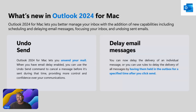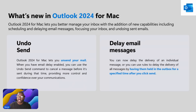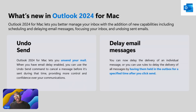Undo send and delay email messages. Undo send means once you send an email and realize you put the wrong name or wrong information, you can undo the send — provided the recipient hasn't opened the email yet. If they have, you'll need to send another email. You can also delay the delivery of an individual email or change the rules. The difference between scheduled send and delayed email is: scheduled send requires your device to be switched on since the email hasn't been sent yet, whereas delay email means it's been sent but stays in your outbox and delivers at a set time as long as you have internet connection.